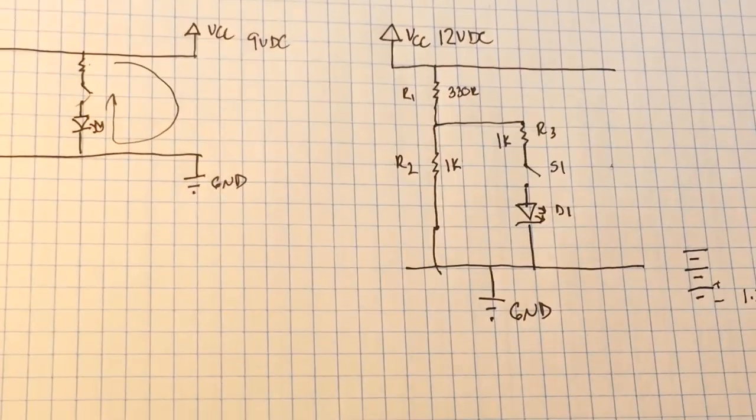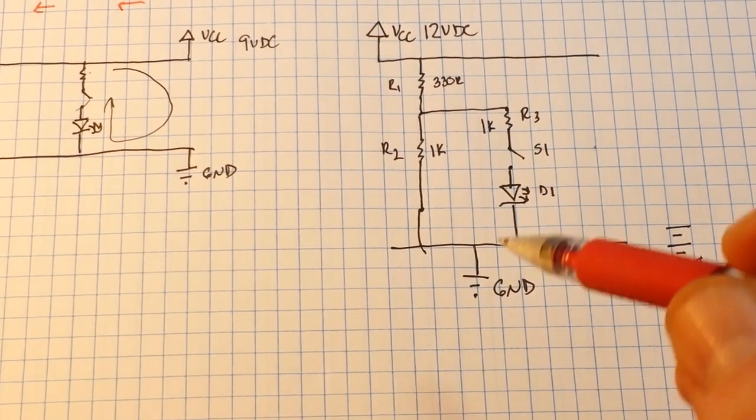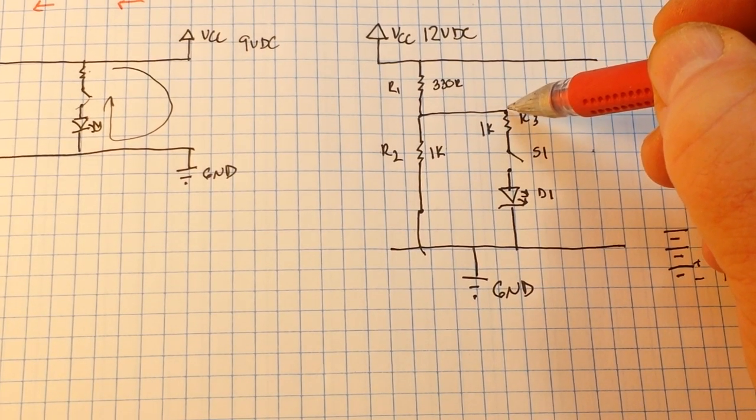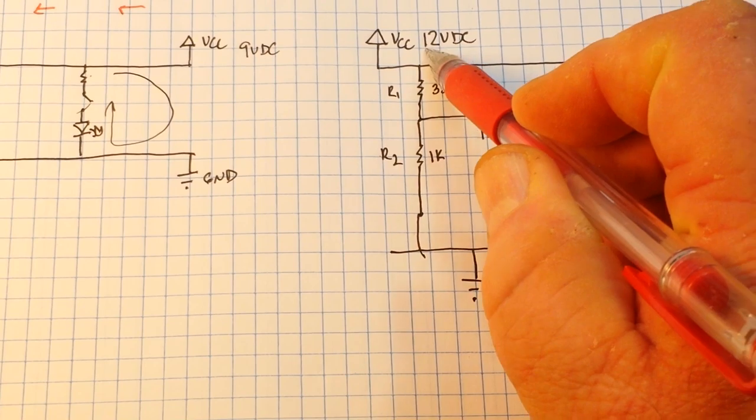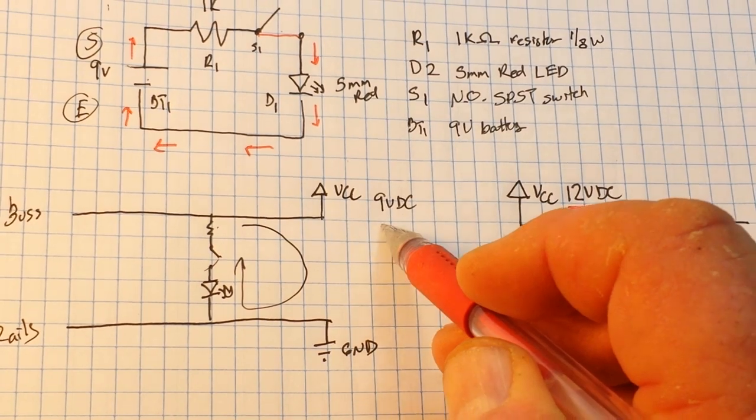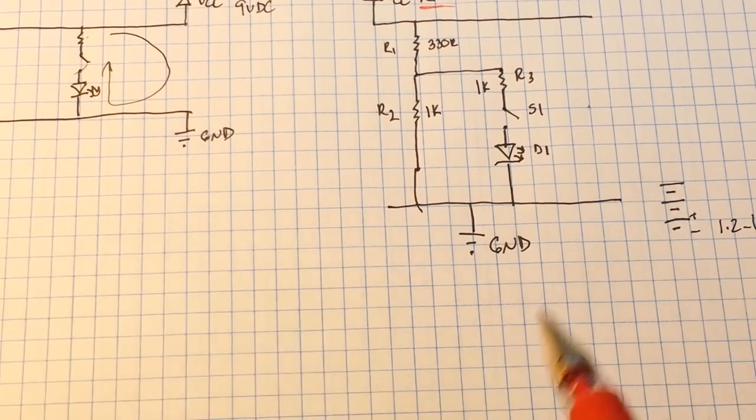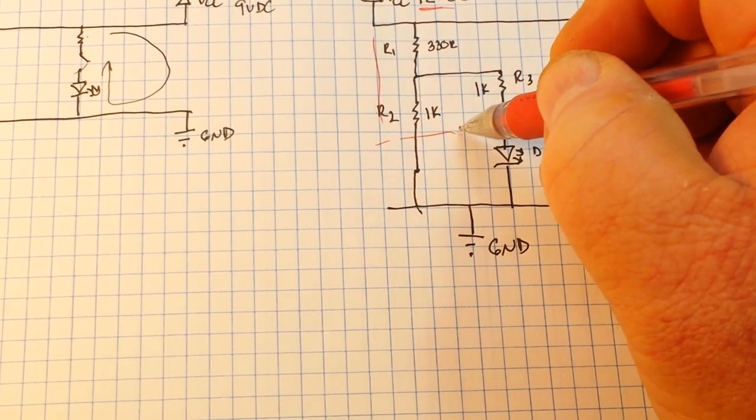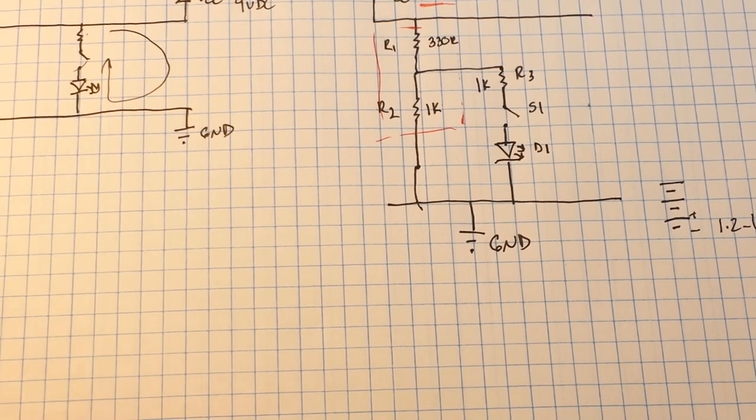So let's take a look at the circuit and see how it differs. Well, instead of our resistor getting its current direct from the rail - and you notice in this case the rail is 12 volts, and in our original circuit it was 9 volts, but we still want 9 volts for our diode.